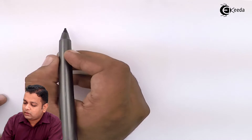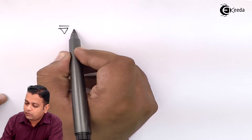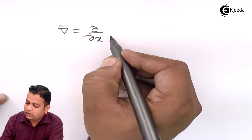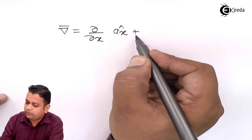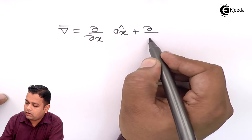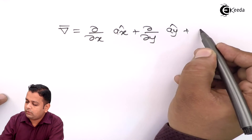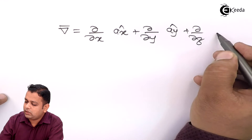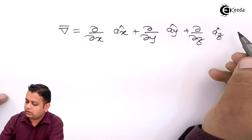As we know, the del operator has the form: del/del-x times ax-cap plus del/del-y times ay-cap plus del/del-z times az-cap.